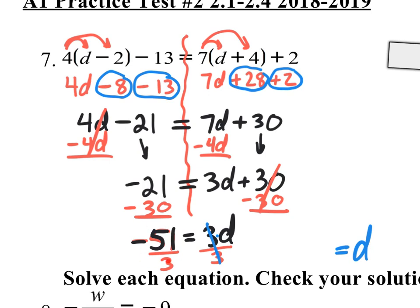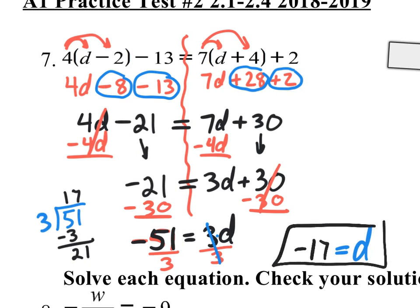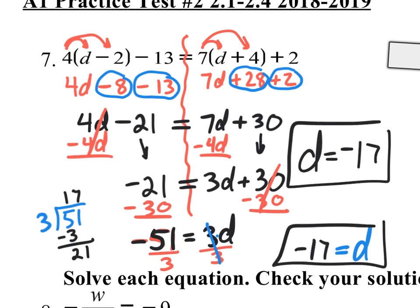If you don't have a calculator, you can put 51 in the box with 3 outside. 3 goes into 5 one time, subtract to get 2 left over, bring down 1, and 3 times 7 is 21. Keep in mind this was a negative divided by a positive, so your answer is negative 17. So d equals negative 17. That's the answer for number 7.